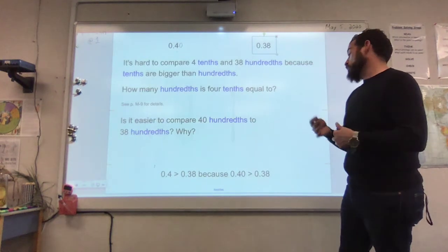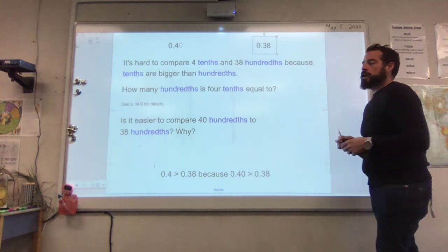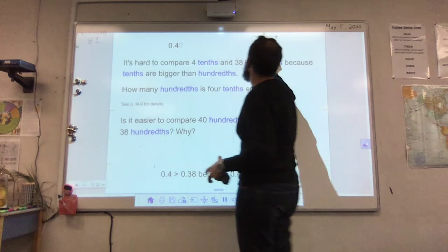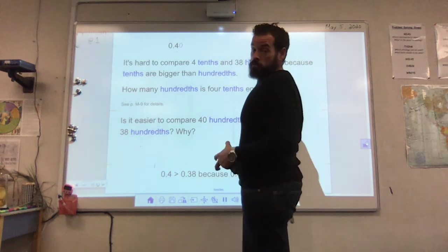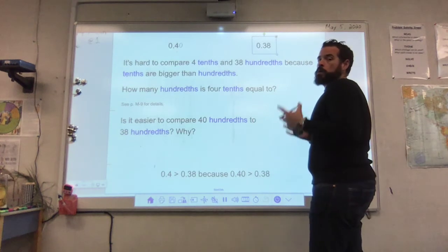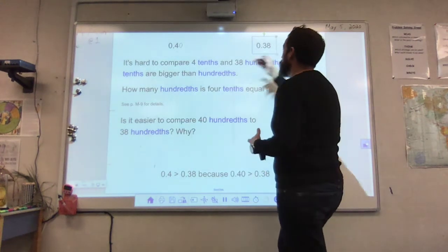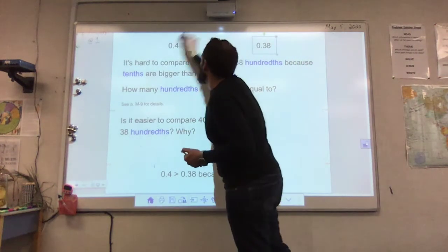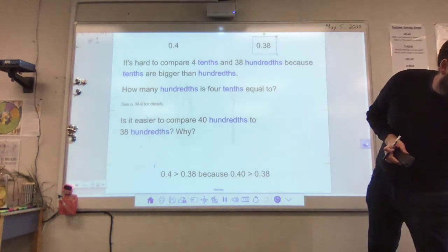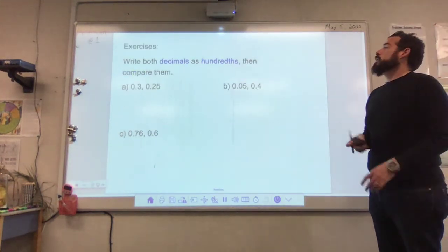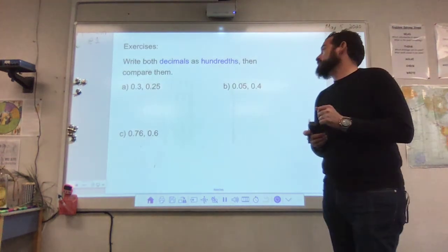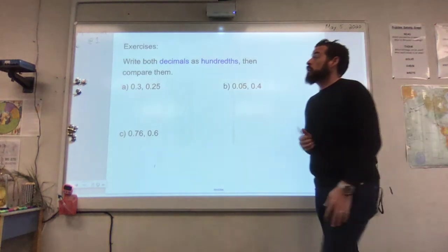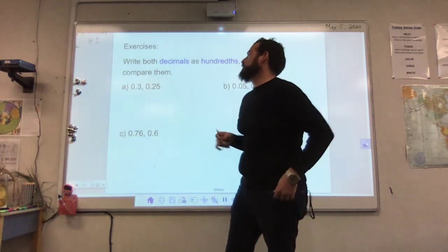Here's a reminder: when written as a decimal, fractions with a denominator of ten have one digit after the decimal point — that's the tenths place. Fractions with a denominator of one hundred have two digits after the decimal point. For example, three tenths is zero point three, but three hundredths is zero point zero three. When writing hundredths with a value less than ten, there will be a zero in the tenths place. So always have two numbers to the right of the decimal for hundredths, and one number for tenths.